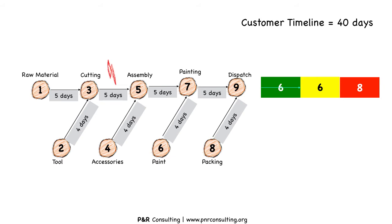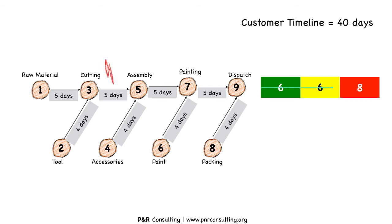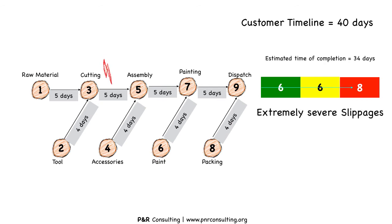What if the penetration is in yellow? It indicates that the project is still under control, however it may get off track at any moment. Here the estimated time of completion becomes 28 days — we could sense a slight delay. What if it is in red? Penetration in red indicates a possibility of delay, and at this point the issue has to be escalated to top management. Notice that the estimated time of completion here is 34 days. Any more slippage will take us close to the project deadline and hence cause a delay.